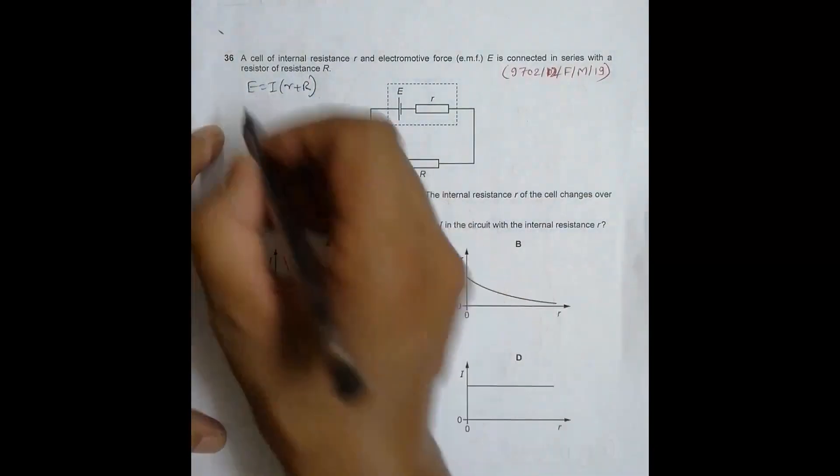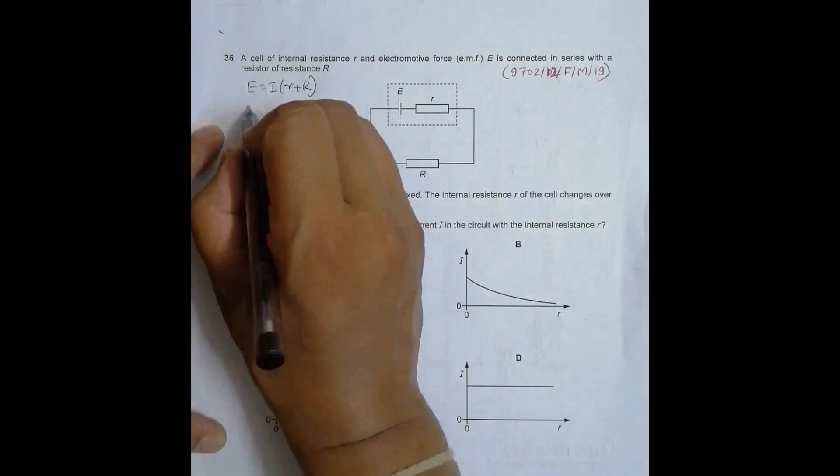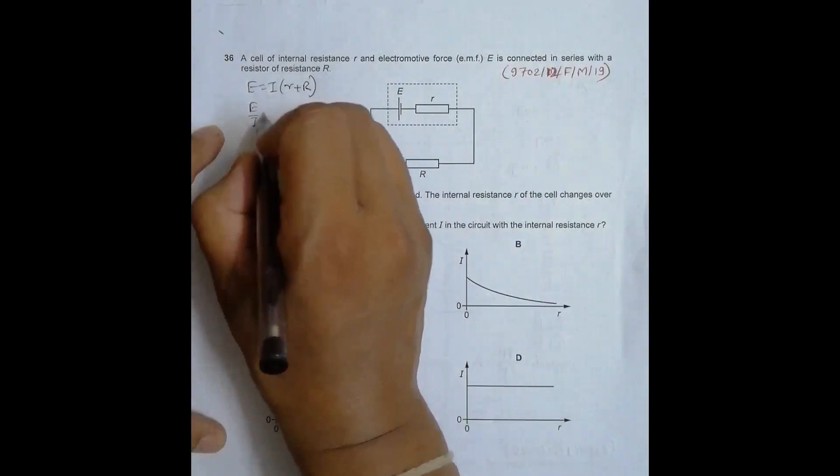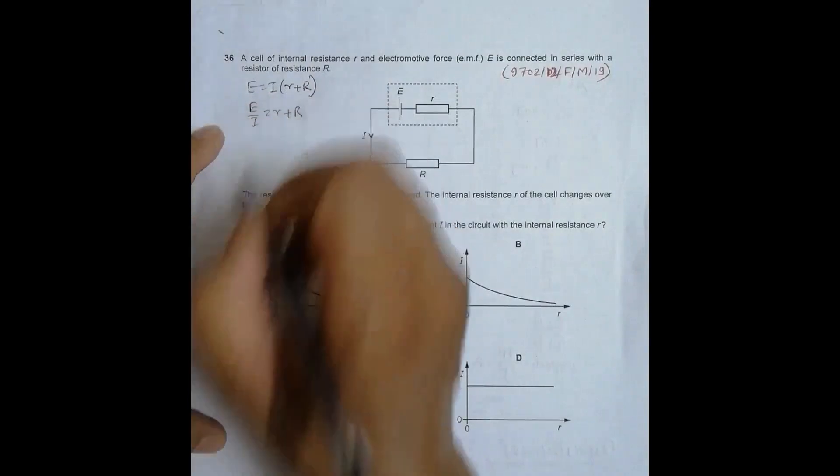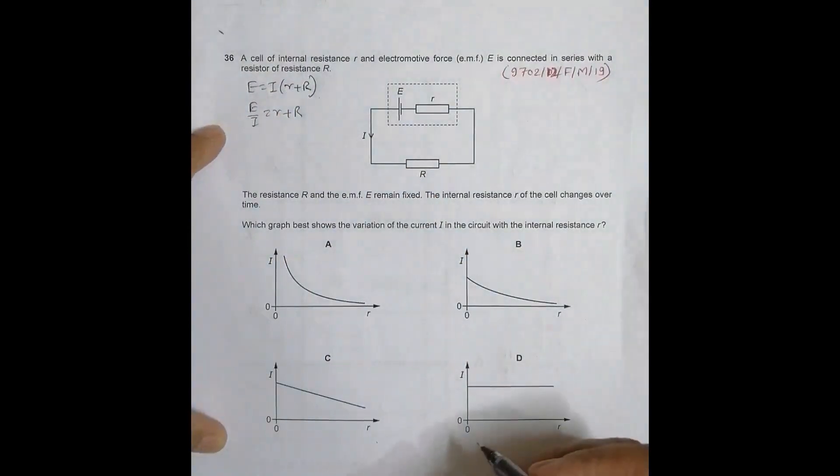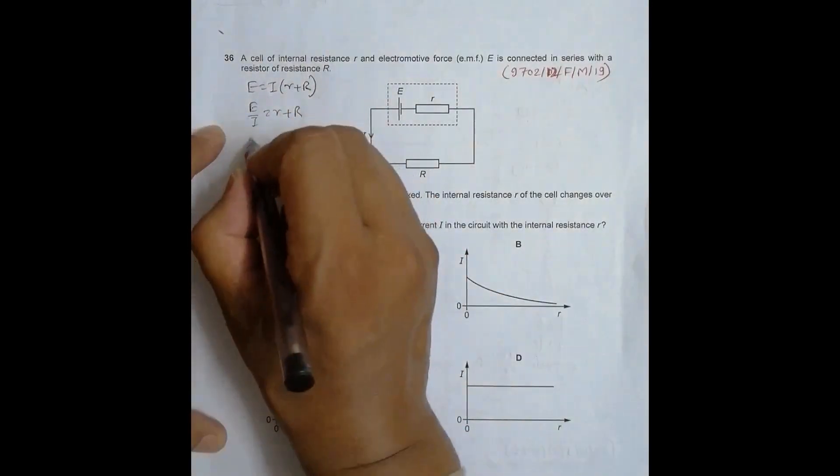Or I can say r equal to something. So let me do it as E/I is equal to small r plus R. So let us put certain values of r here. When we have small r equal to 0...